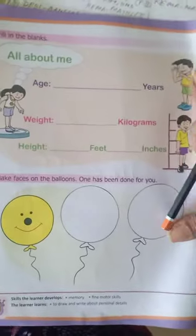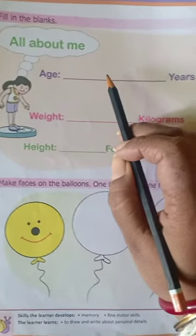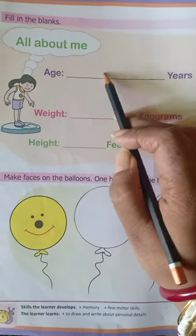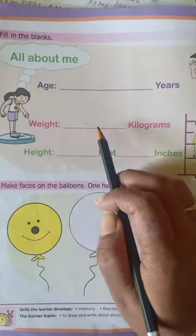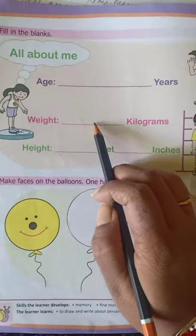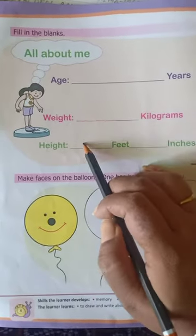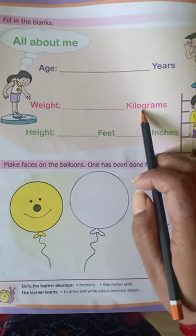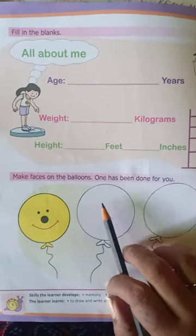You will try to find out now. You know what is your age — if it is four, you will write four years. You will write your weight, and if you know your height in feet, you can write that too.